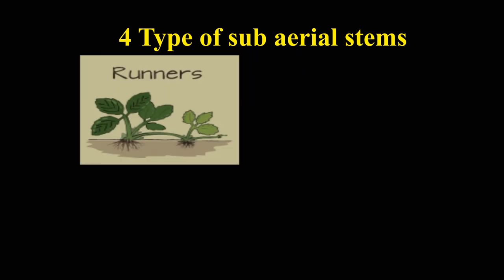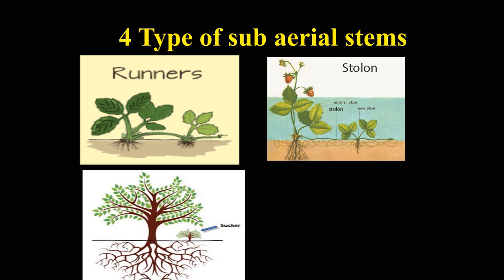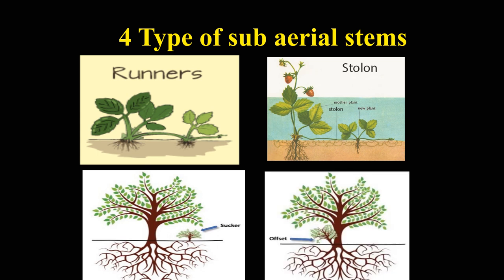The four types are: 1. Runner, 2. Stolon, 3. Sucker, 4. Offset.